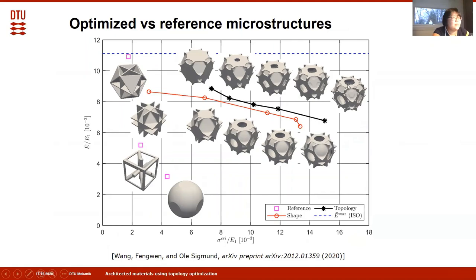The shape-optimized designs have much simpler geometry and are easy to fabricate. Compared with reference designs, the optimized designs show better buckling strength. Due to the minimum length scale requirement, we did not reach the maximum Young's modulus. That concludes my talk—thank you for listening.